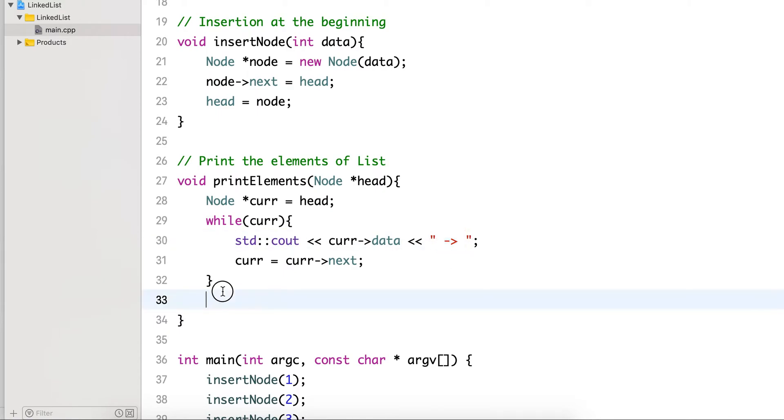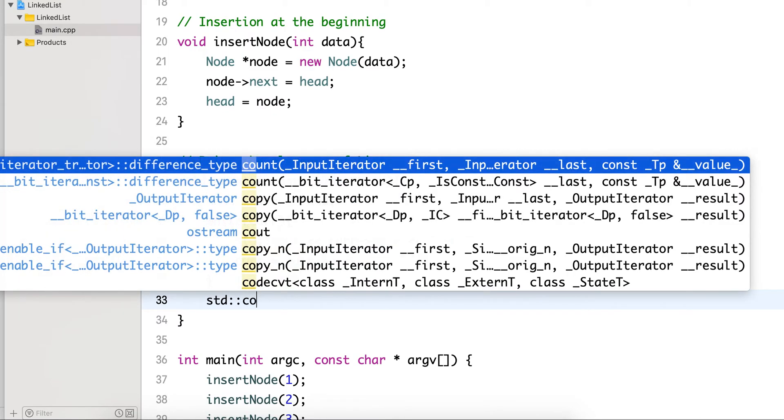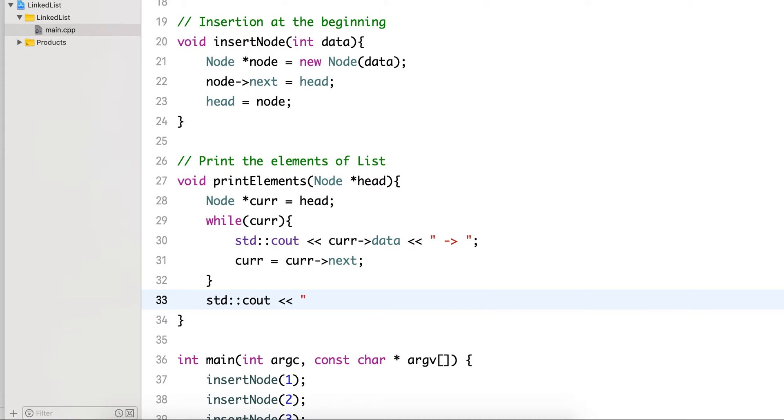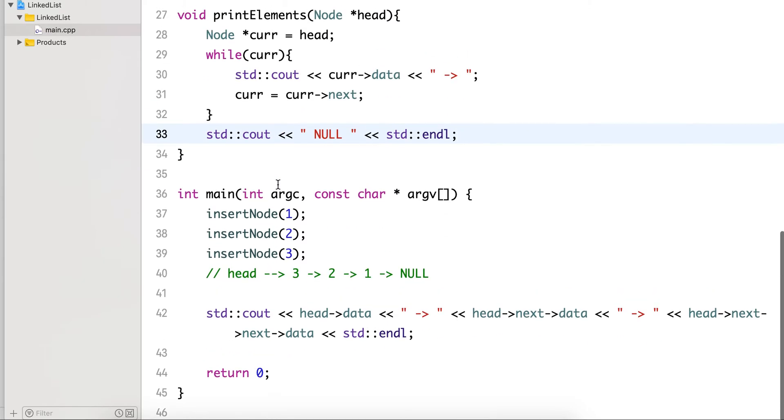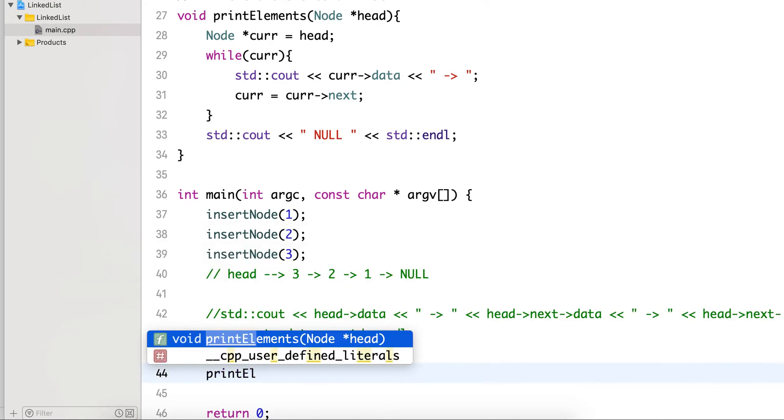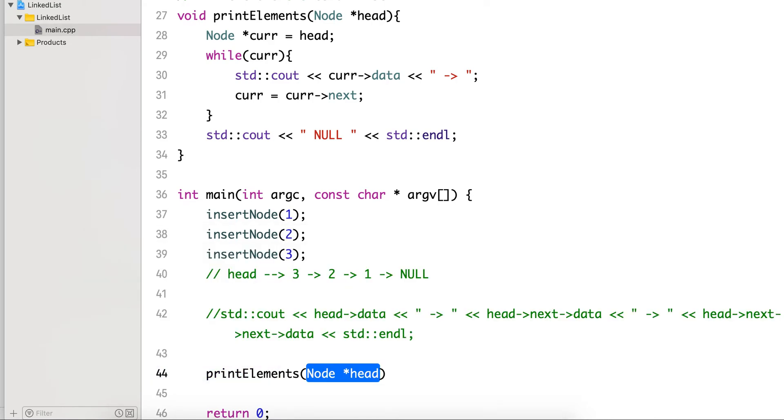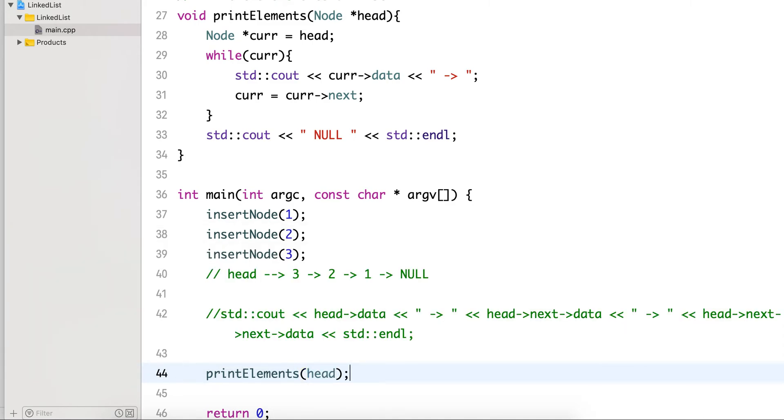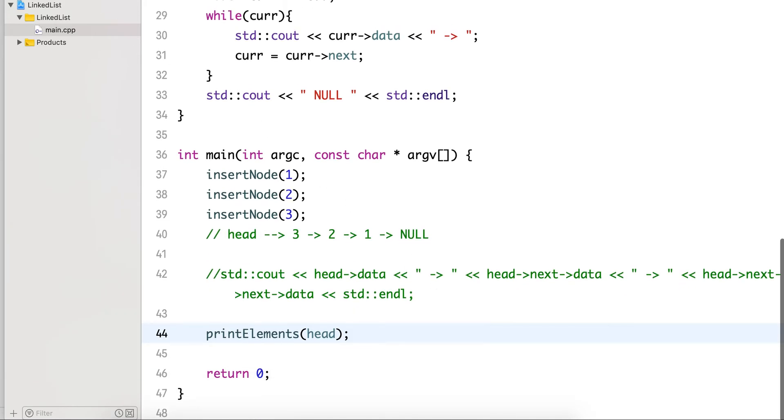So I will add null here. Earlier I was manually printing it, so I will now use this API to print the list. Let's see what it prints.